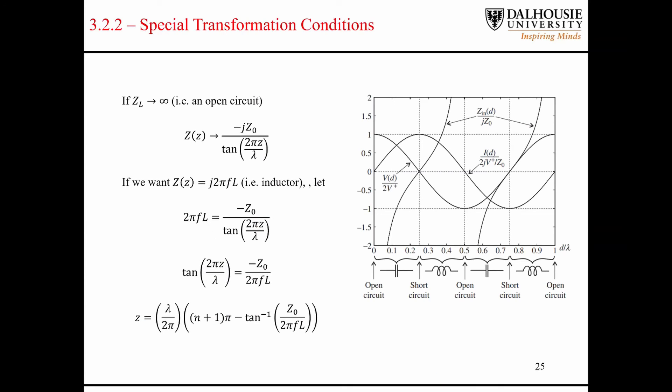Again, we can do the same thing for an inductor. This time we set the left-hand side equal to the impedance of an inductor, and we solve for z, and we come up with an equation that gives us, that puts us somewhere in this range here. This time we set the right-hand side equal to the impedance of an inductor.